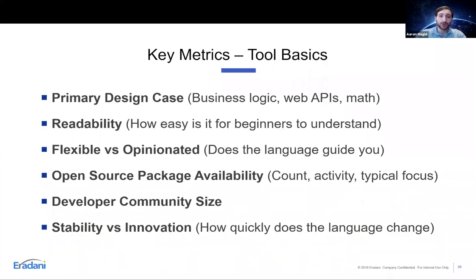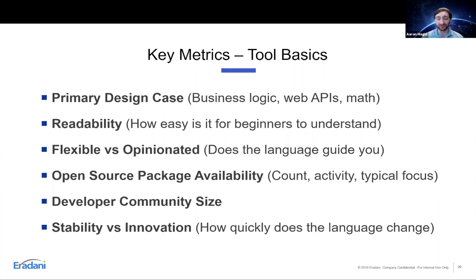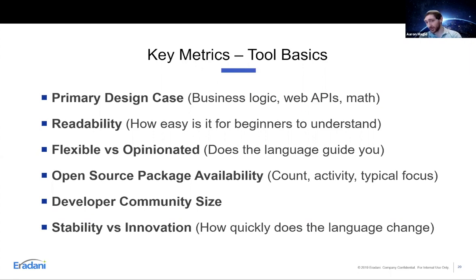Looking at the tools, the most important metric is first and foremost what was the language built to do — that colors what it's really good at, going right down into the heart of the language's philosophy. We're looking at its primary use case, the open source package availability — obviously if you can download trustworthy reliable secure code rather than writing everything from scratch that's a big plus — and we're looking at stability versus innovation: some languages are more stable, some stay on the cutting edge and are a little more unpredictable.